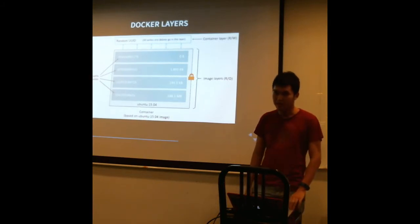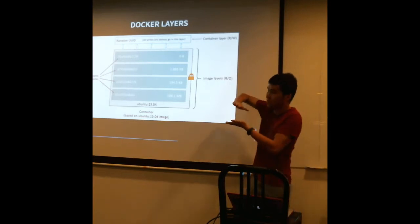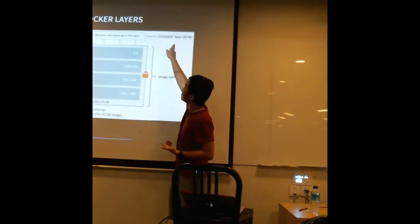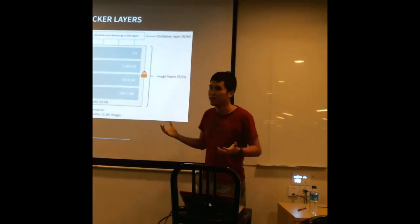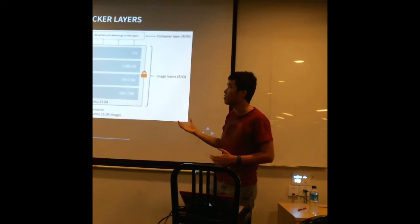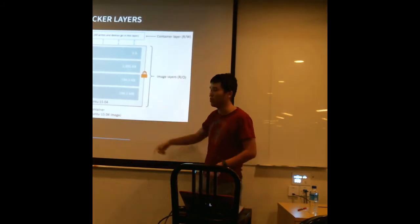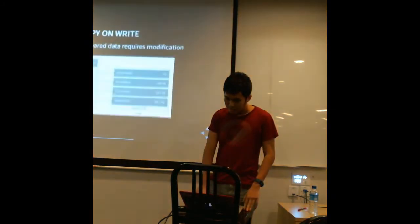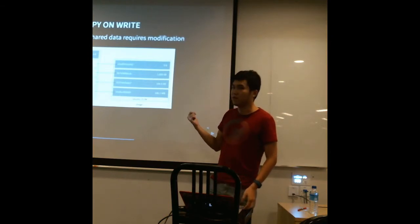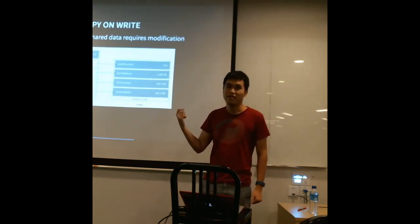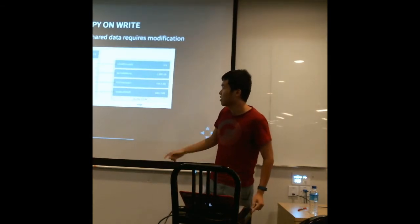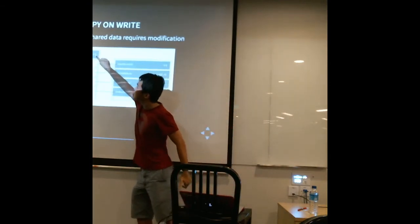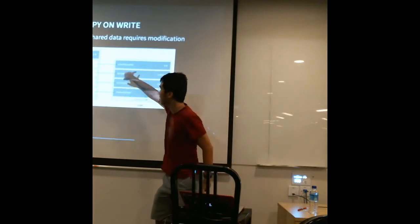How does Docker deal with data? It uses a bunch of layers that are all read-only, and then stacks them up together to give you a unified view of your file system. When you run a container, it creates a thin container area that's read and write for you to change your data, which is then thrown away when the container is removed. Below the container is a read-only image — like an Ubuntu 15.04 image — where all layers are read-only and addressed by cryptographic content hashes. The system works with a copy-on-write algorithm. If you want to modify a file, you copy a version of that file all the way to the top layer and then modify it there.